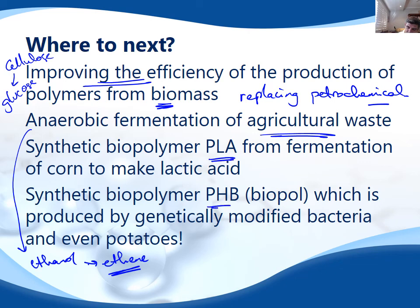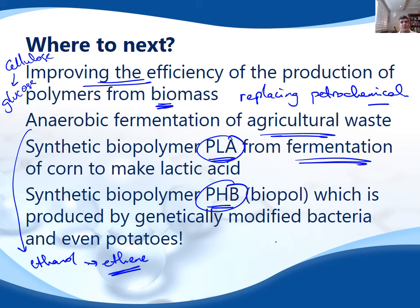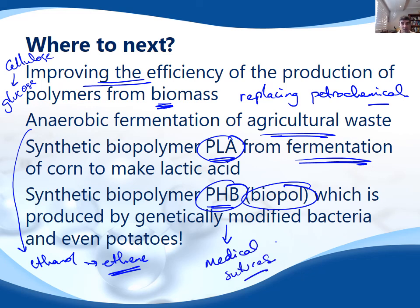Polylactic acid (PLA) and polyhydroxybutyrate (PHB) are the two main examples that come up, and I encourage you to look at either one — not both — in a little bit more detail. Polylactic acid is created through fermentation of corn to make lactic acid, which is then polymerised. PHB, often also known by the more commercial term Biopol, is produced by genetically modified bacteria but can also be produced by potatoes. This one is a really good example to talk about in terms of the medical industry for sutures and similar applications. As long as you've got a good example, you're ready to go in this area.